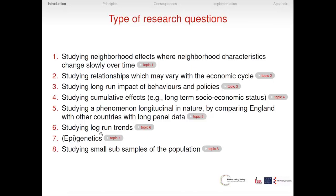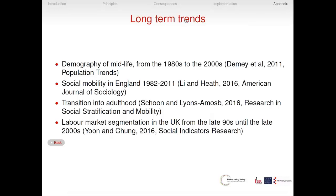You may also want to study long-run trends, especially in demography — for example, what's happening in demography from the end of the 1980s to the 2000s. You can study social mobility in England, transitioning to adulthood, and labour market segregation over decades.